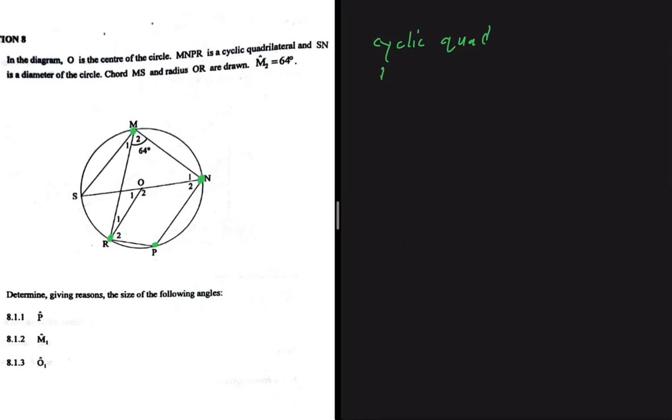What else do we have? We have diameter - we know that it obtains an angle of 90 degrees on the circumference of the circle. And then we have chord - equal chords subtend equal angles and so on. And then we are told that M2 is equal to 64 degrees. I think now we can answer our question 8.1.1.